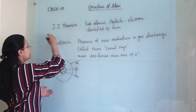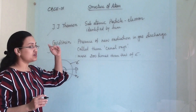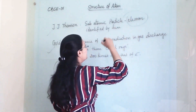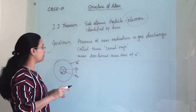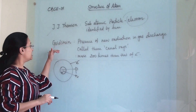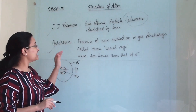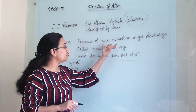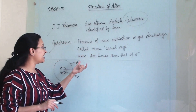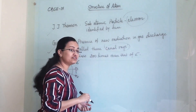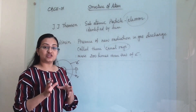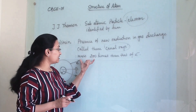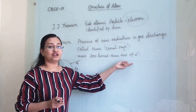The first scientist we need to know is J.J. Thomson, who discovered the first subatomic particle — the electron. The second scientist was Goldstein, who discovered a new radiation in gas discharge. He called them canal rays. These rays were positively charged, deflected by negative environments, and had mass about two times greater than that of electrons.